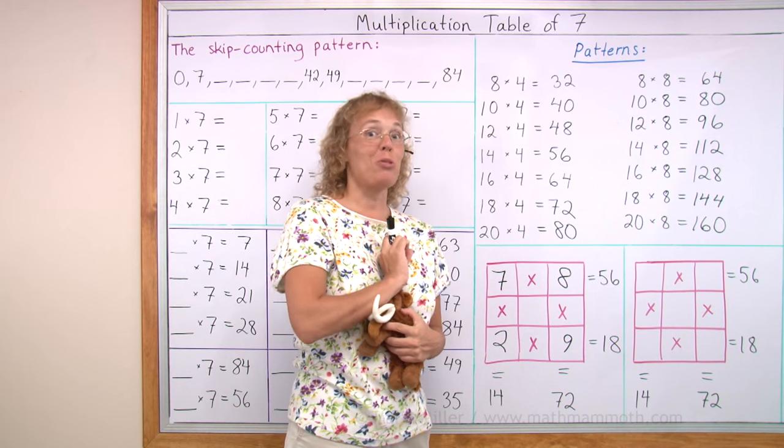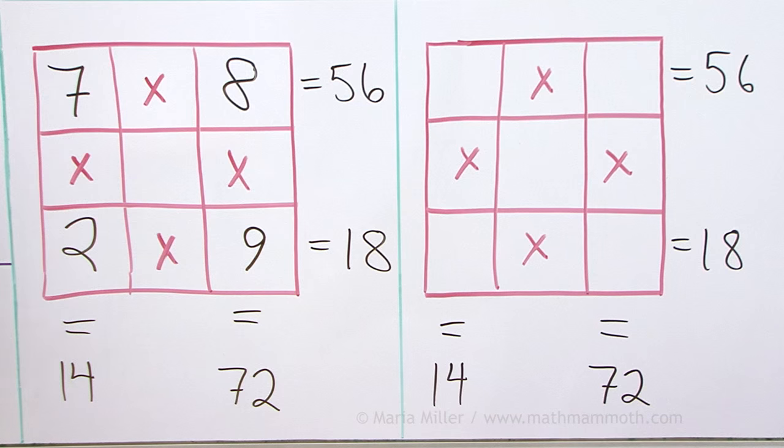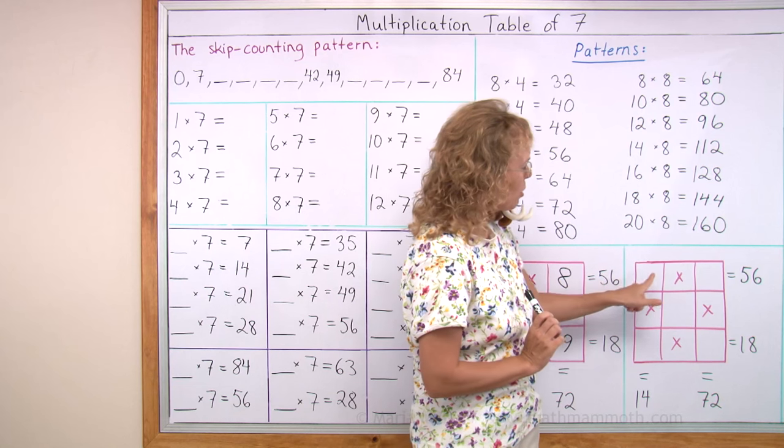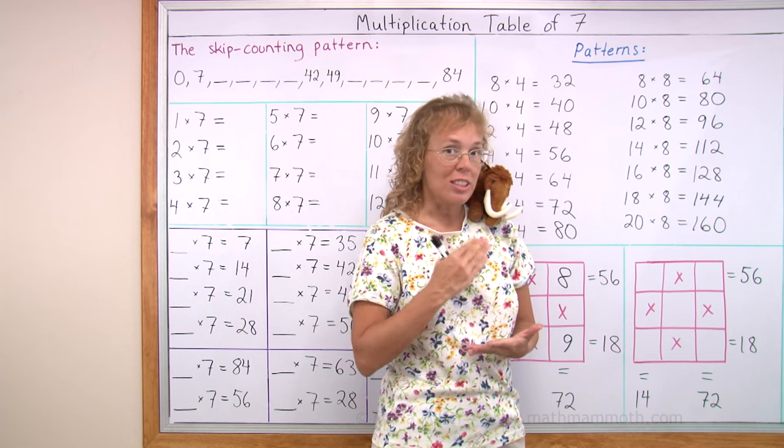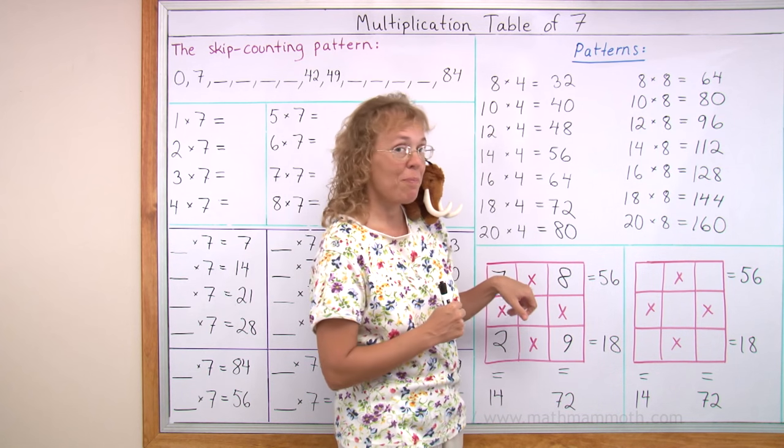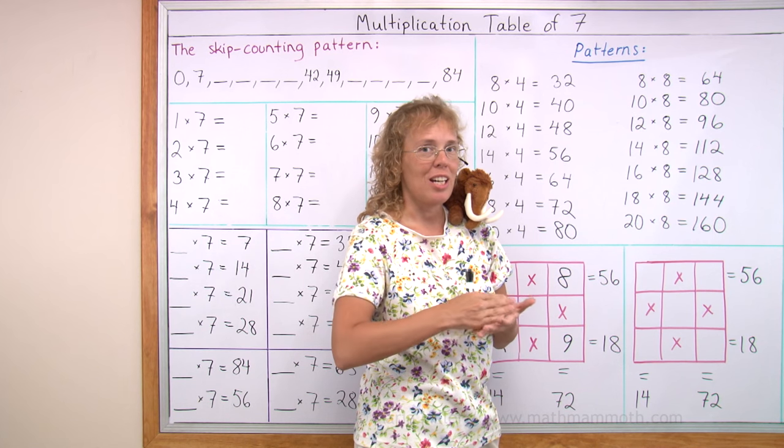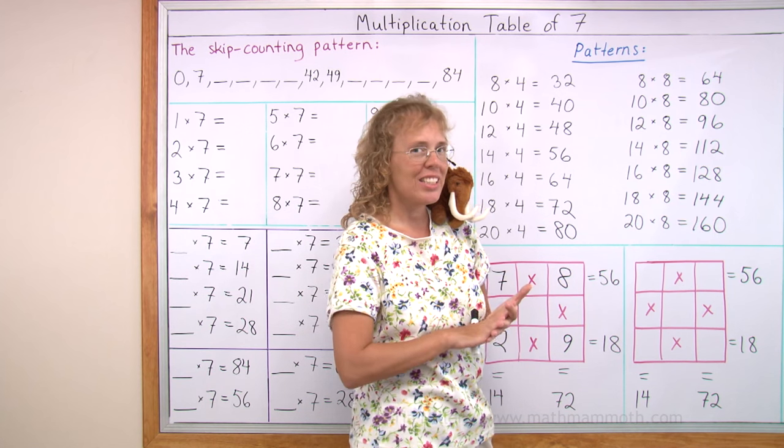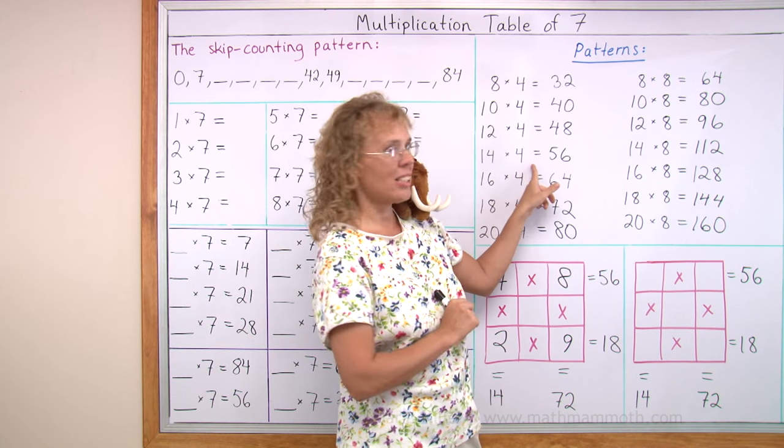But there's another solution. And I want to show you that one over there. So what times what makes fifty-six? We already used seven times eight in this first one. But in our lesson we have seen another number times something makes fifty-six. It was up here. Over here. Fourteen times four makes fifty-six.